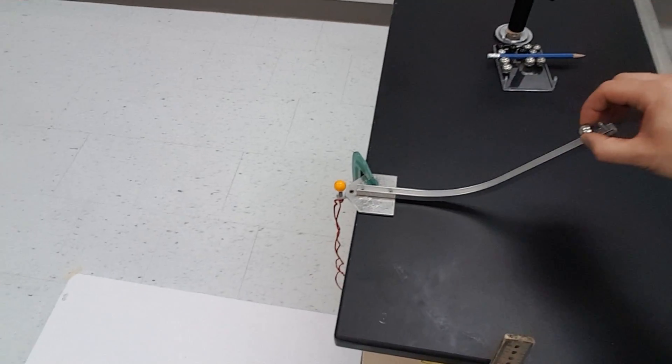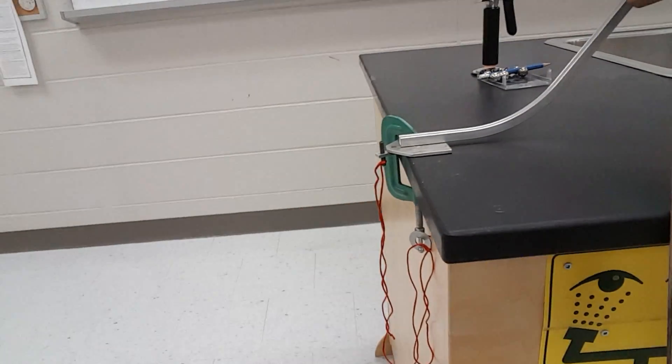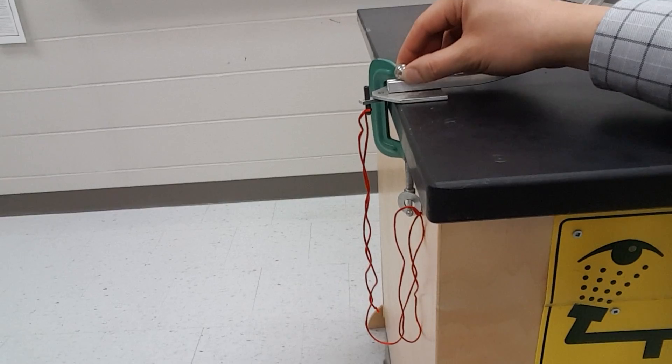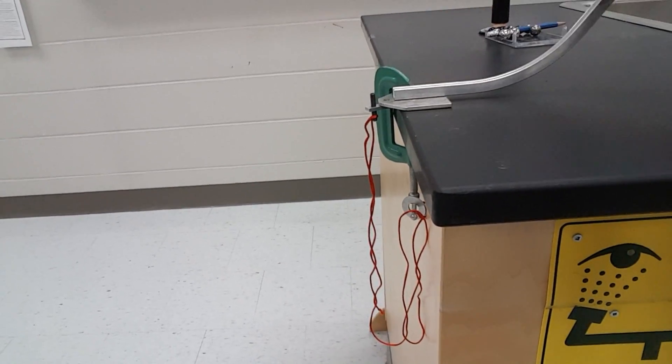When we conduct this lab we can actually determine how fast it is traveling once it hits the ground based upon a few basic calculations. First off as mentioned before we'll notice that even though it possesses a horizontal velocity its initial vertical velocity is at zero. So that's one of our givens.